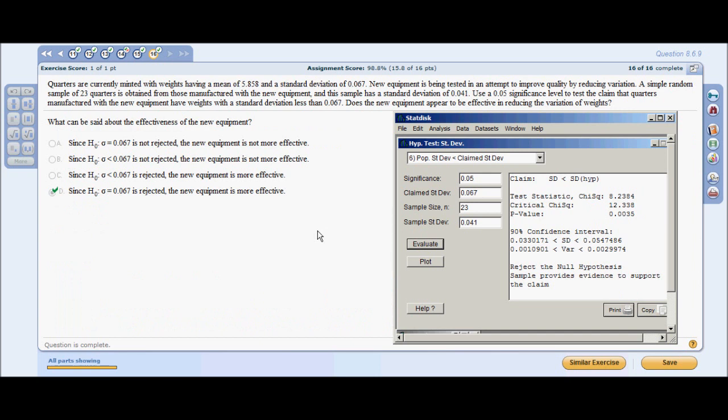And finally, number 16. A very long-winded problem, but don't let that intimidate you. Just plug in your inputs and you're good to go. Quarters are currently minted with the weights of having a mean of 5.85 and a standard deviation of 0.067. There's new equipment being tested to improve quality. A simple random sample of 23 quarters is obtained from those manufactured with the new equipment. And the sample has a standard deviation of 0.041.